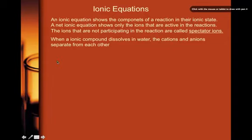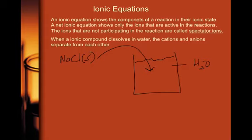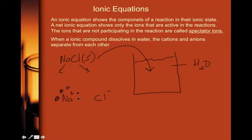If you have some NaCl solid and you throw that salt into a beaker of water, that salt is going to dissolve. What that means is that the sodium and the chlorine separate from each other — they get surrounded by water and separate. You would have a sodium ion and a chlorine ion, with water molecules surrounding them. The water molecules separate the ions from each other.